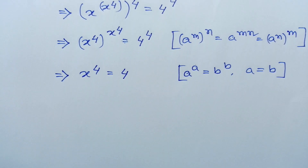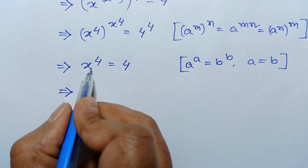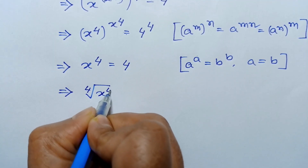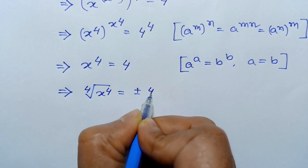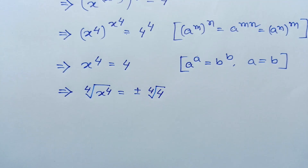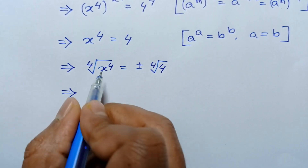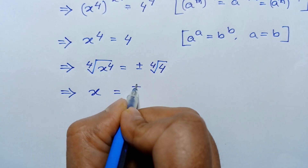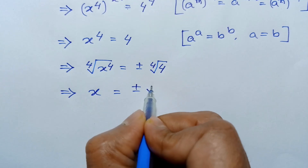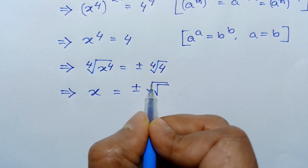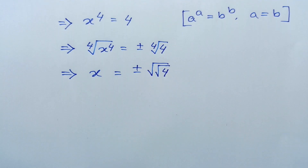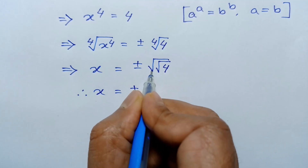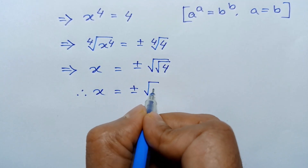Taking the fourth root of both sides, we will have the fourth root of x to the power 4 equal to plus or minus the fourth root of 4. The 4 and the power 4 cancel out, leaving x equal to plus or minus the fourth root of 4, which can be written as square root of square root of 4.